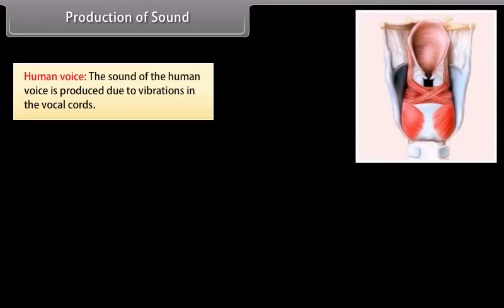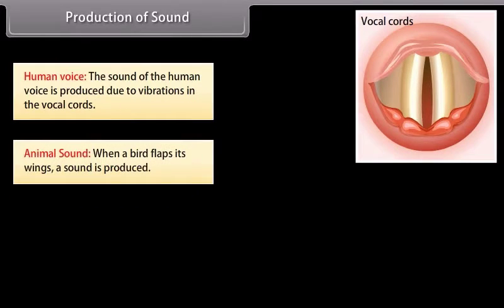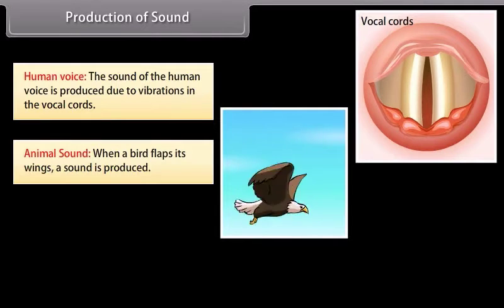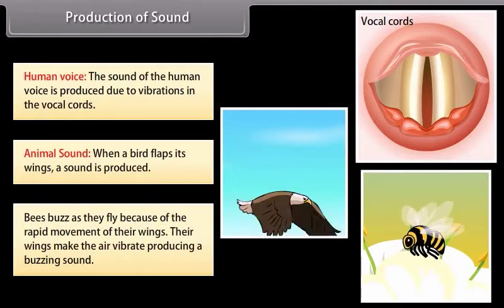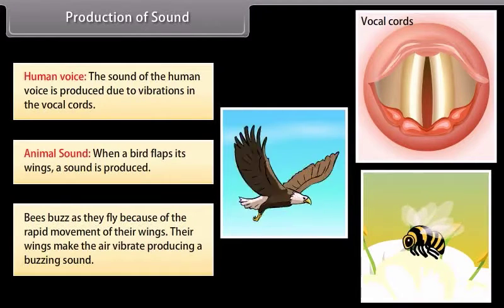Human voice: The sound of the human voice is produced due to vibrations in the vocal cords. Animal sound: When a bird flaps its wings, a sound is produced. Bees buzz as they fly because of the rapid movement of their wings. Their wings make the air vibrate, producing a buzzing sound.